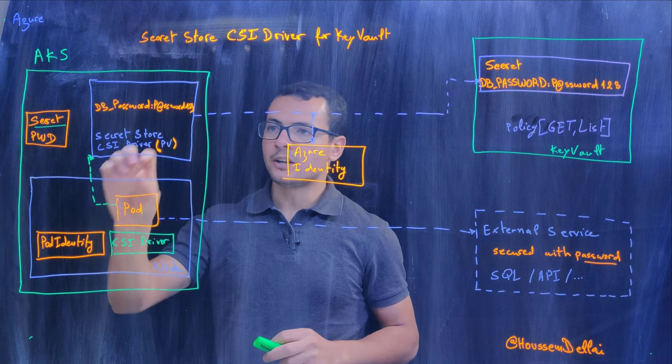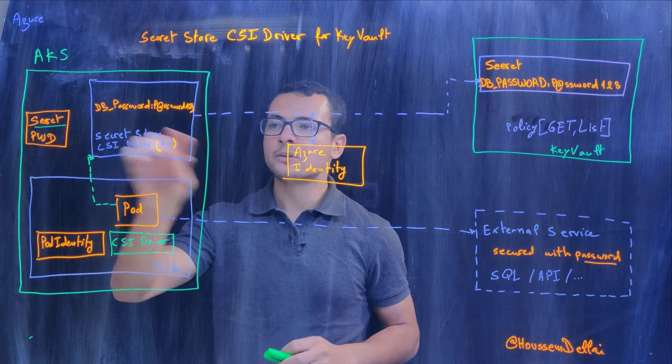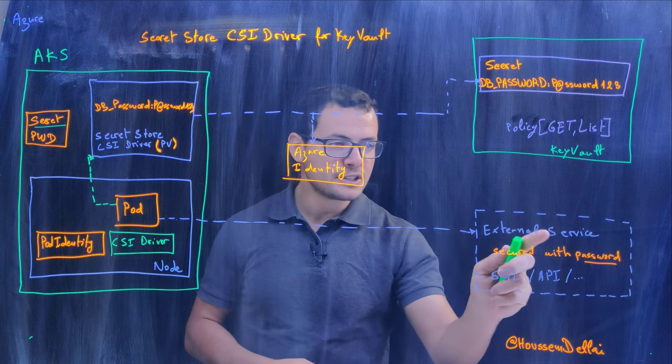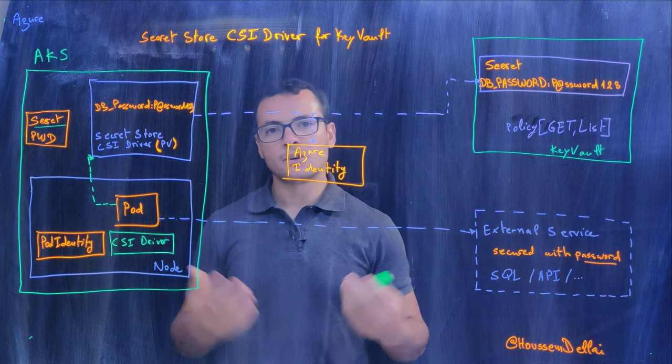Then my pod can read that volume and will find this password available, let's say, as a file. My pod will use it to connect securely to my external service.